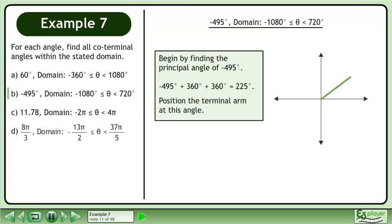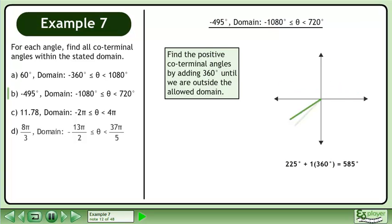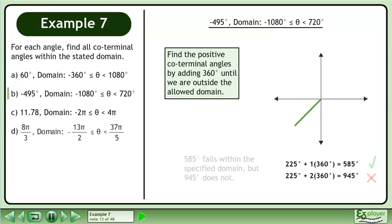Position the terminal arm at this angle. Find the positive coterminal angles by adding 360 degrees until we are outside the allowed domain. 585 degrees falls within the specified domain but 945 degrees does not.